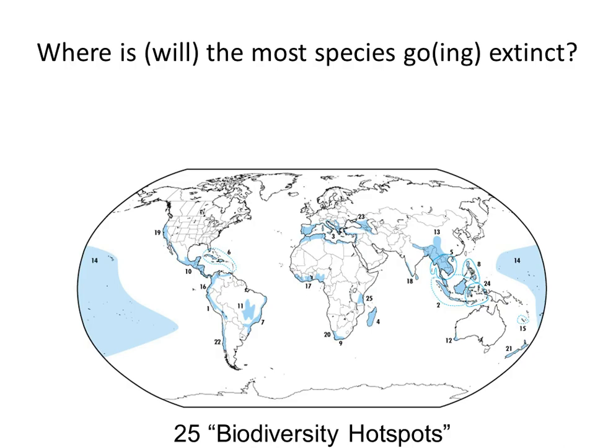Where will most species go extinct? Here is a global map of the 25 biodiversity hotspots where most species would go extinct.